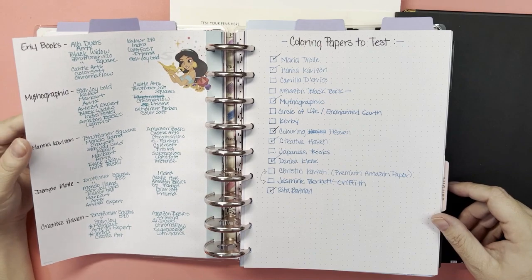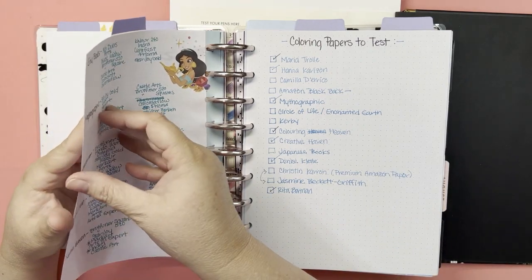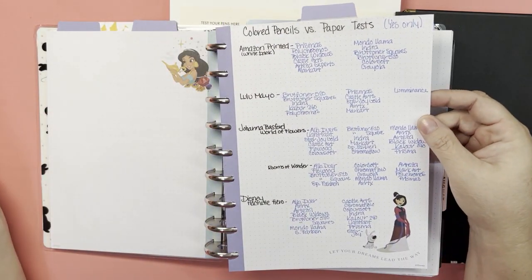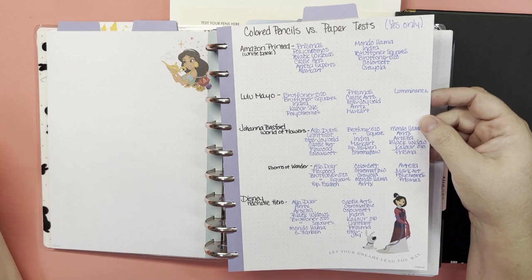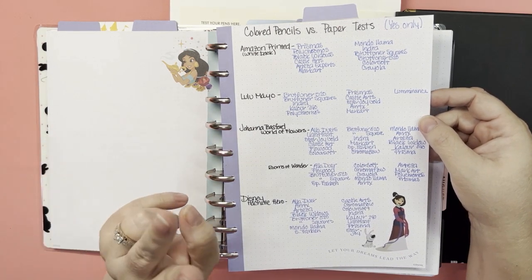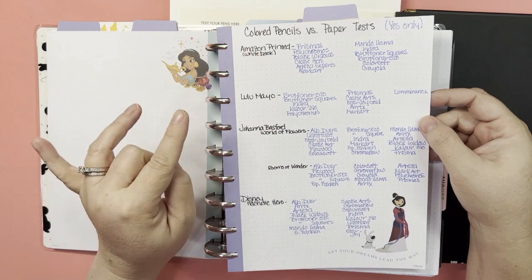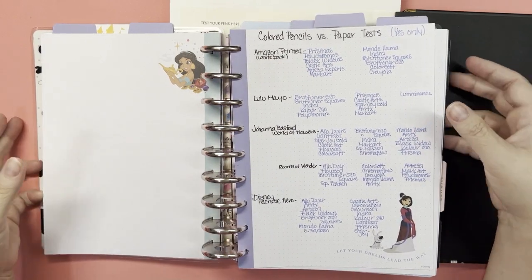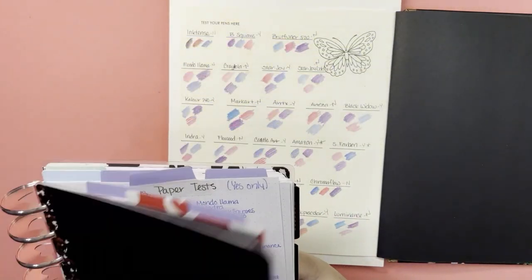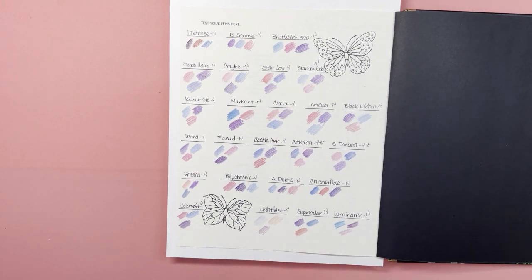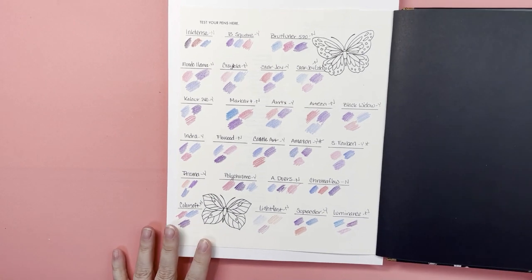But let me know any other papers that you can think of. I have already done the Eerie books, we've done Mythographic, Hannah Carlson, Denise Clett, Creative Haven, Amazon regular white back paper, Lulu Mayo, Joanna Basford both different types because her older books are different than her newer books, and I have done the Disney Hachette hero books.